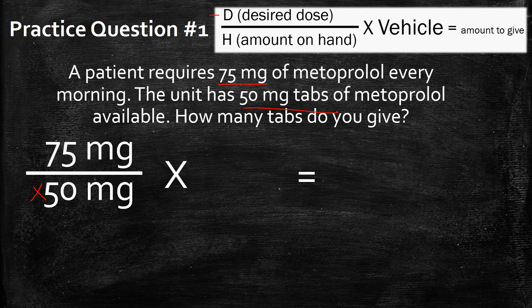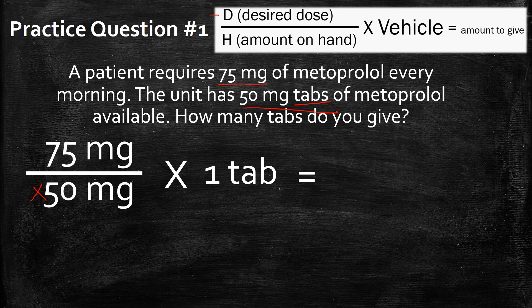The next part is the vehicle. In this case it's simple — it's tabs — but in future videos it's going to be more complicated: liquids, milliliters, pre-filled syringes, patches, and the like. We'll try to go through as many different scenarios as we can. So for this problem it's 50 milligrams per tab, so the vehicle is going to be one tab.